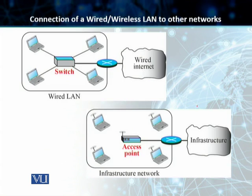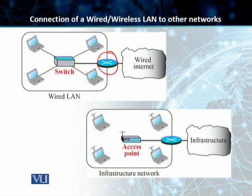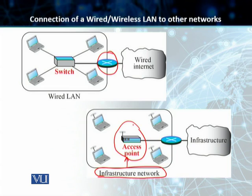The next point is the connection to other networks. In the case of a wired LAN, it can be connected to any other network, such as the internet, using a router — everything is wired. In the wireless LAN, which we also refer to as an infrastructure network, it uses a centralized device that we call an access point. This access point is used to connect the wireless network to external infrastructure by using a wired connection.